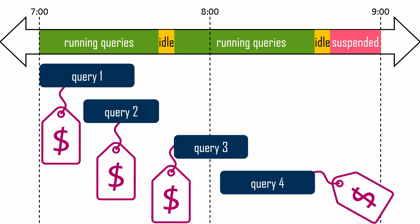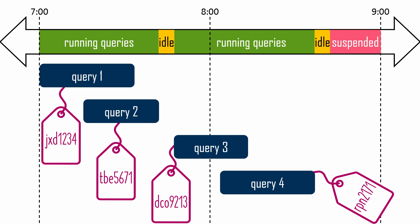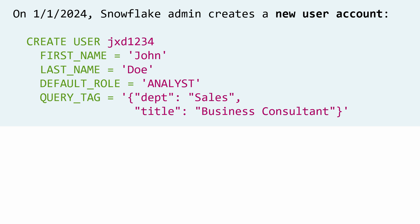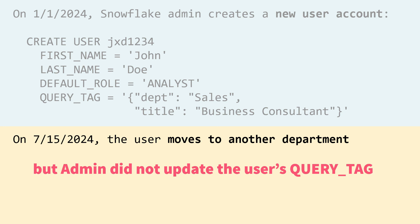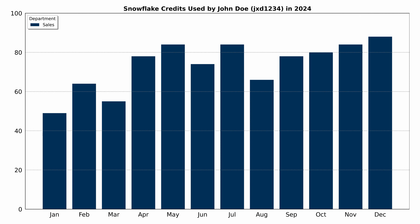Sharing a cluster across several teams often makes sense to keep the cluster busy, but shared clusters need to rely on query tags to assign costs to the appropriate team. Each query is automatically tied to one user ID, which is helpful, but you can also have queries tagged with other metadata like department name or job title of the submitter. However, if an employee moves to a different department mid-year and an admin is not notified to change the user's query tag values, all of that user's costs will be incorrectly allocated to the old department.